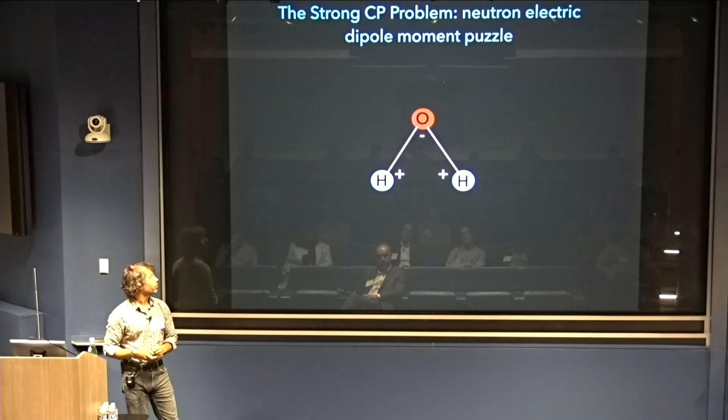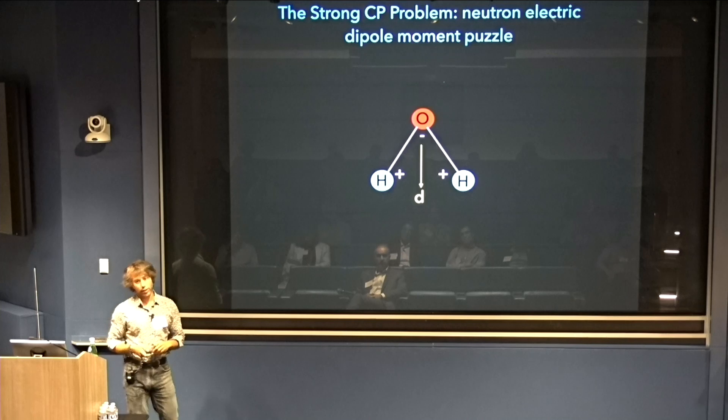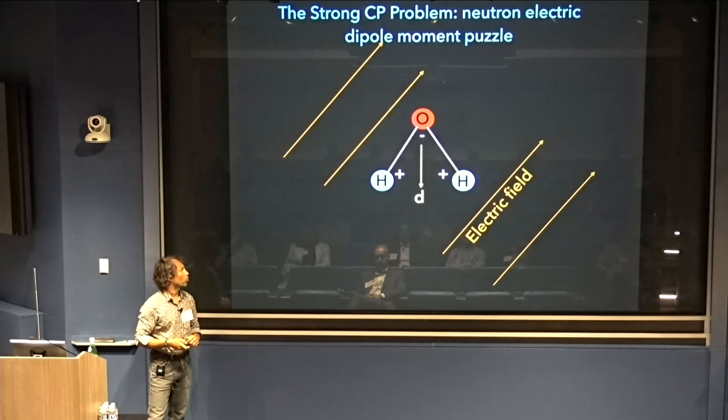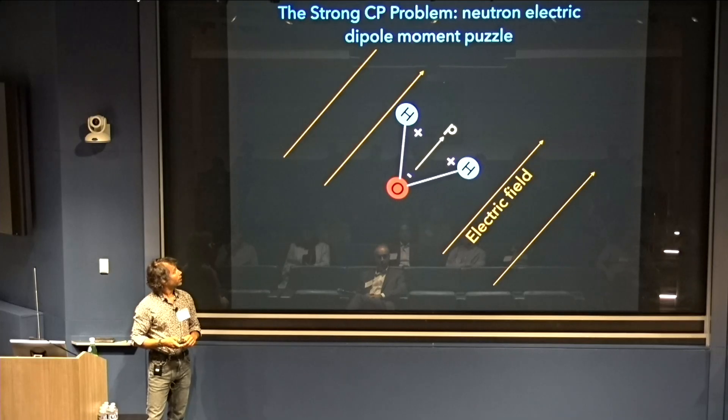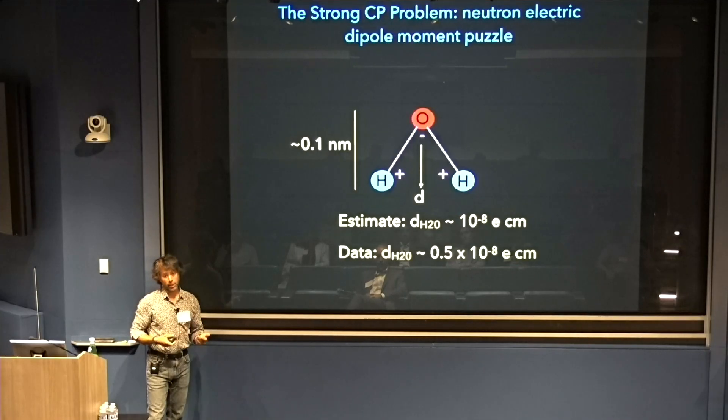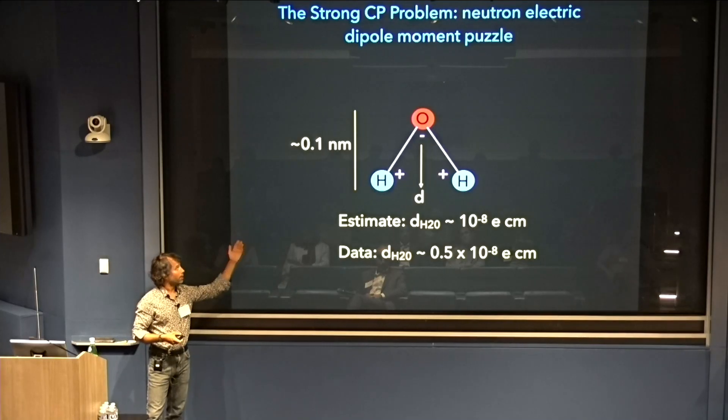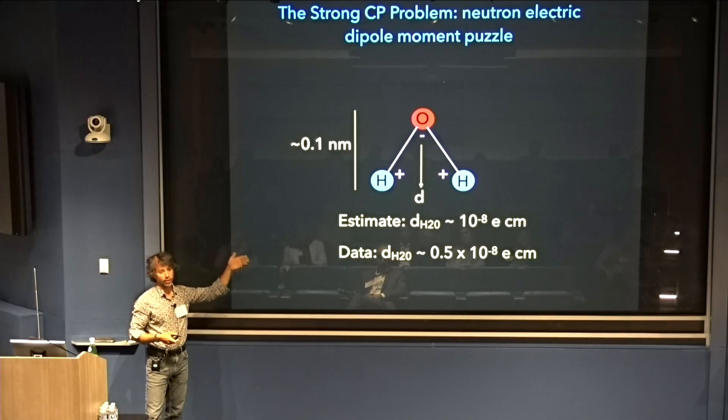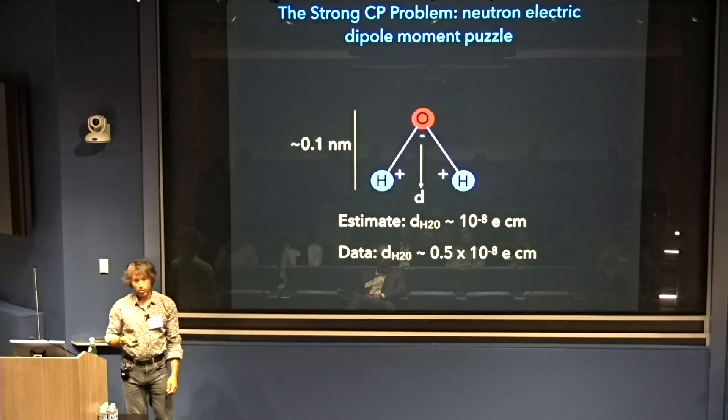Water looks a lot like a neutron. It's electrically neutral, but there's some charge asymmetry, which means there should be an electric dipole moment pointing in the direction of that charge asymmetry, which would cause water to precess in an electric field. We can estimate the magnitude of the electric dipole moment of water. It's roughly equal to the charge which is separated, about one electric charge, times the distance of separation, the size of water. We multiply these two numbers together and estimate an EDM of around 10 to the minus 8 E centimeters, which matches within a factor of two data.